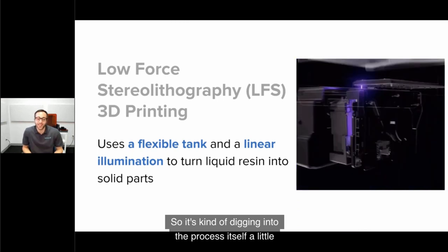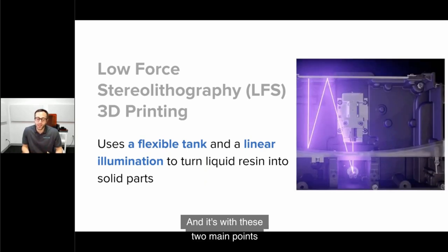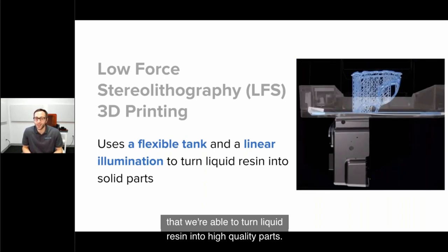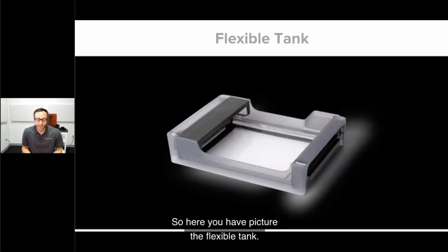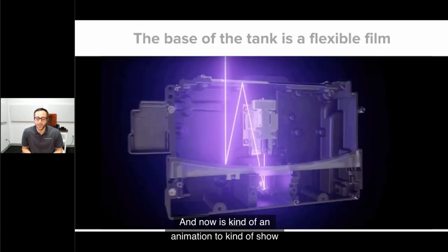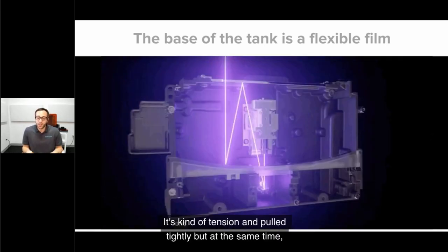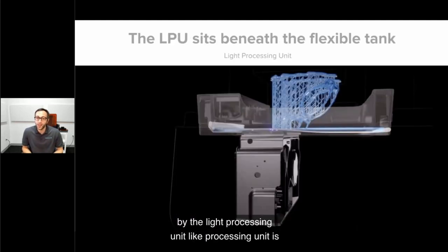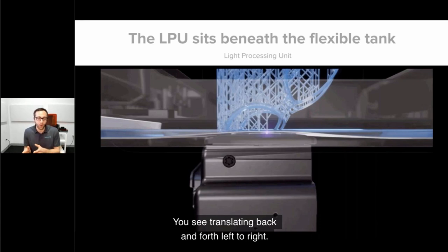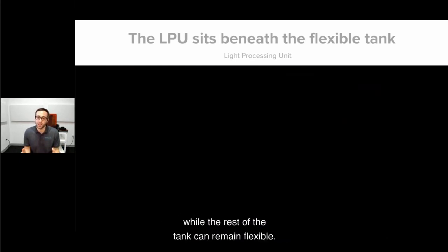Low-force stereolithography has two main components: a flexible tank and linear illumination. Here you have the flexible tank. This animation shows what it looks like while printing. The base of the tank is made from a flexible film. It's tensioned and pulled tautly, but it's free to bend and flex, except where it's supported by the light processing unit.